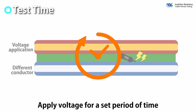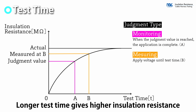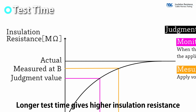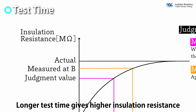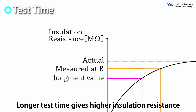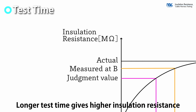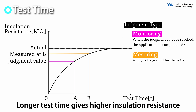Set the time per application. The longer the time, the more electrical load is applied to the test target. In insulation testing, however, a longer test time is advantageous. This is because it takes time for the insulation resistance to reach an equilibrium state. By applying the load for a certain period of time, the insulation resistance of the test target can be measured.